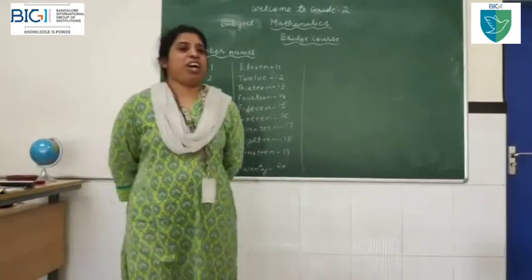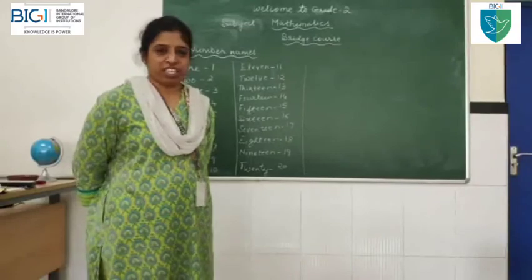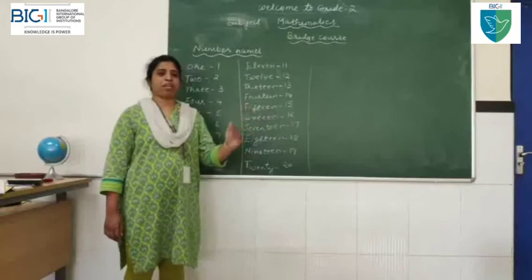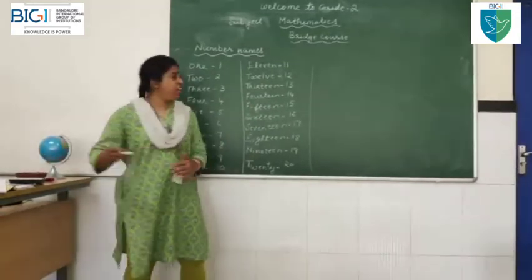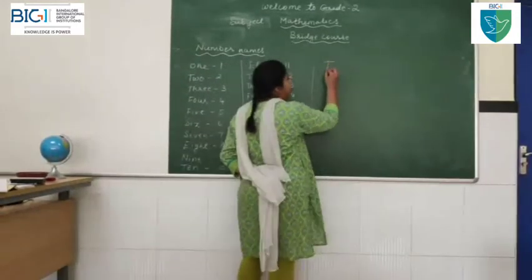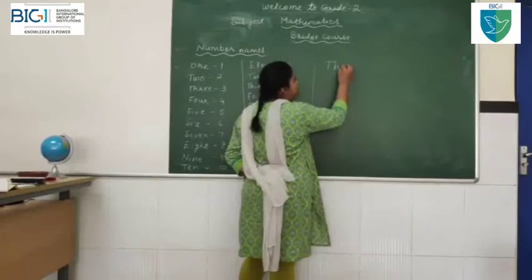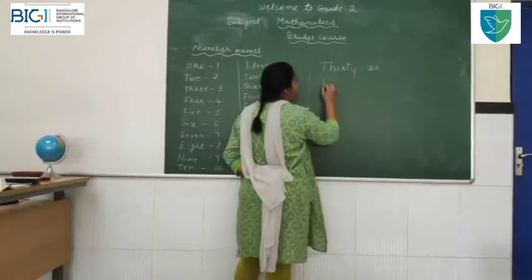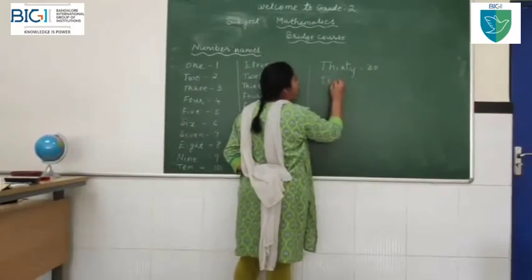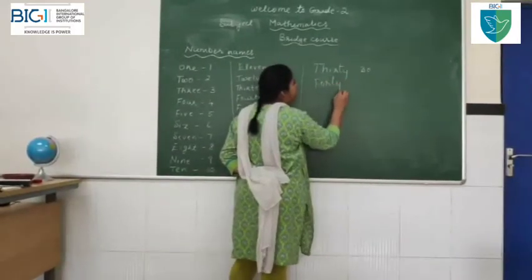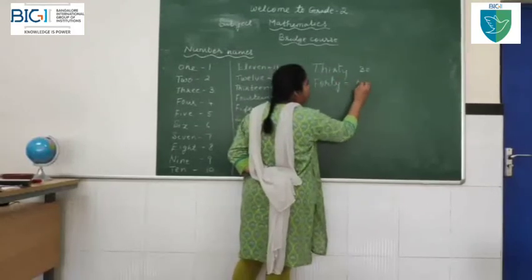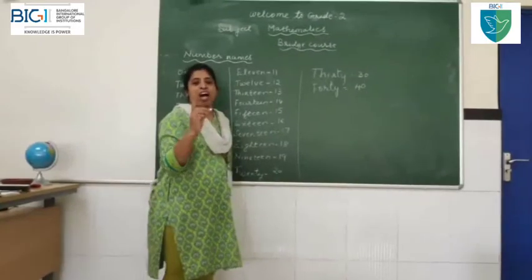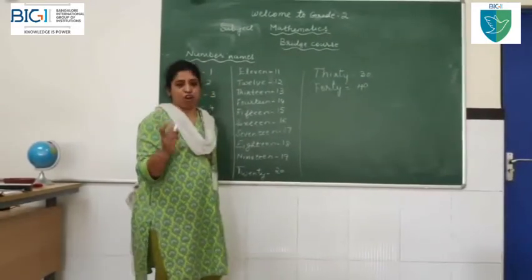Now, you all have learned up to 20. Now, let me teach you the spelling of counting of 10 number names. 30: T-H-I-R-T-Y. 40: Children, it is not F-O-R-T-Y with a U — this is 40, F-O-R-T-Y.